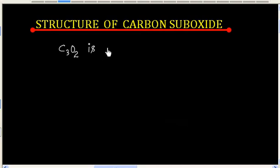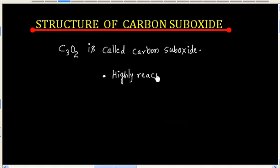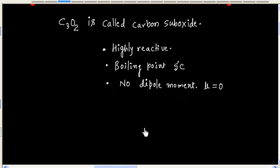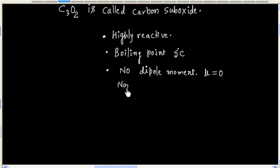C3O2 is called carbon suboxide. It is highly reactive. Its boiling point is about 5 degrees centigrade. It has no dipole moment, that is μ = 0. This means this is a non-polar molecule.